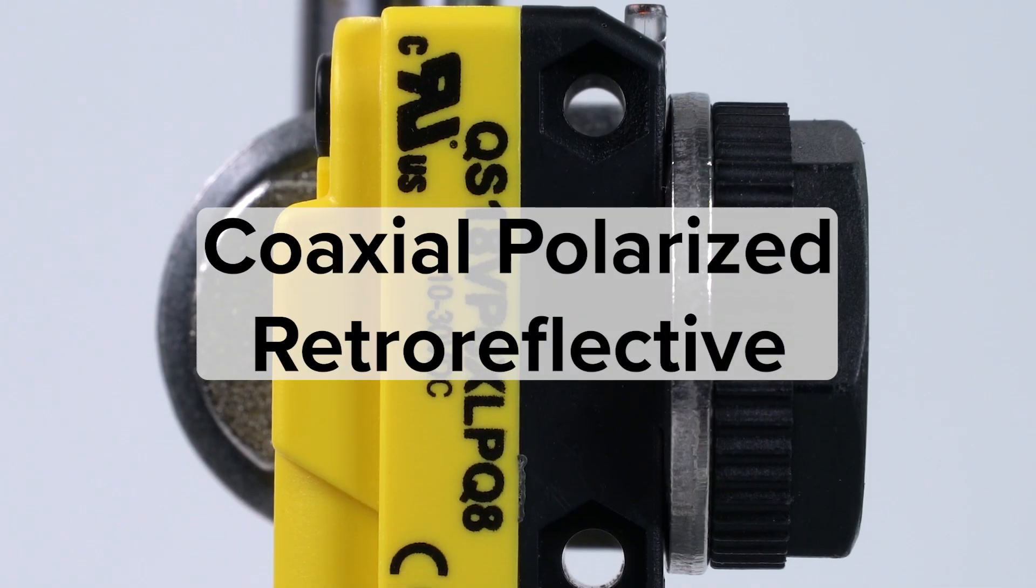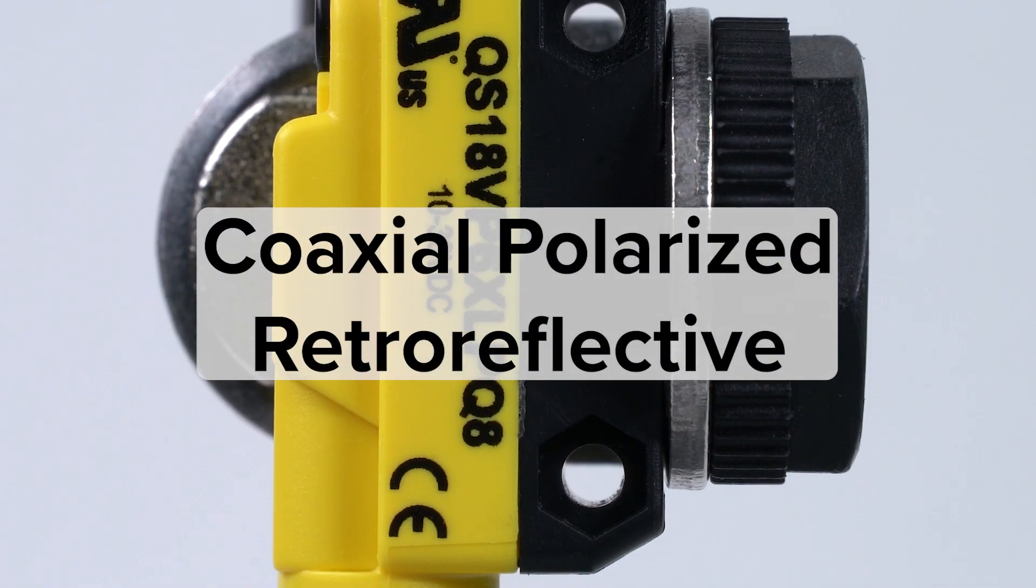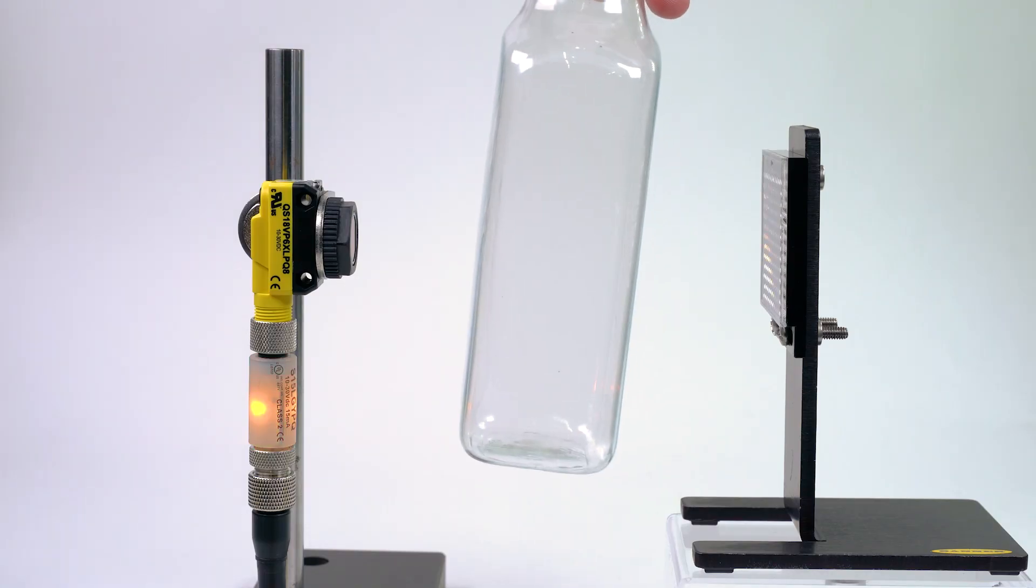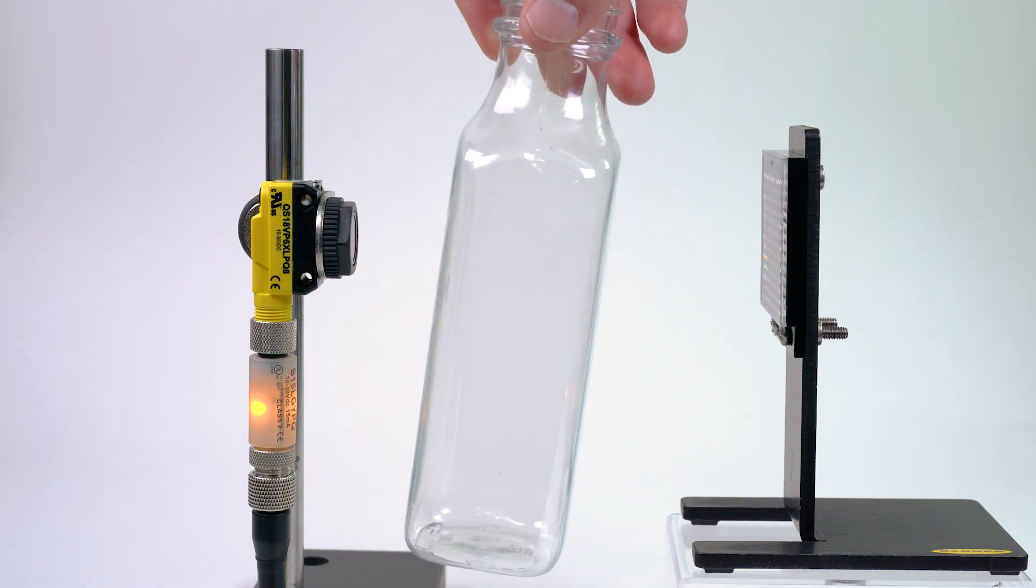The coaxial polarized sensors are designed to detect very small changes in received light, making them the most reliable option for clear object detection.